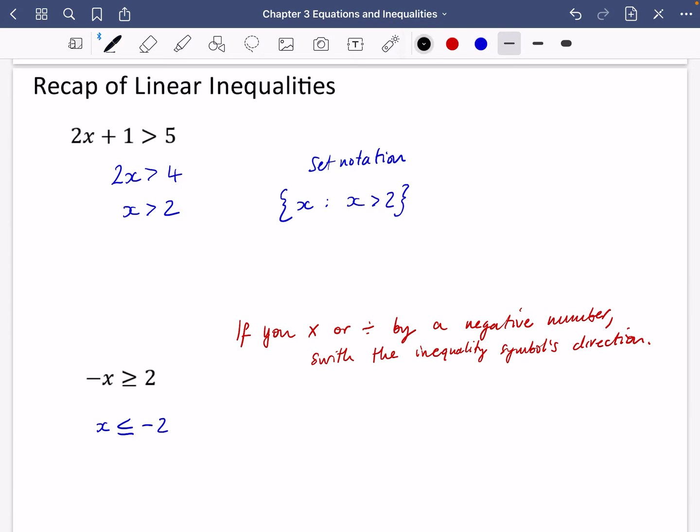Now, there's a couple of different ways that you could think about this. First of all, if I have minus X is greater than or equal to two. If I instead think about adding X to the other side, so I get like this and then subtracting two, I end up with the fact that X is smaller than minus two, which is why it has to be X is smaller than minus two.